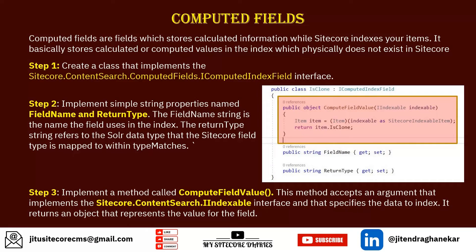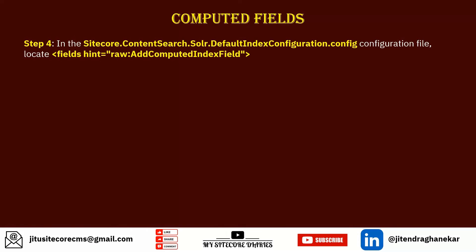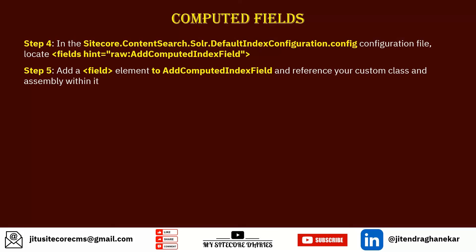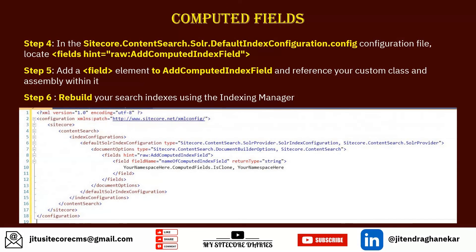Step 4: in the Sitecore ContentSearch Solr default index configuration file, locate the `fieldMap` hint set to `raw` and find the `computedIndexFields` node. Add a field element to `addComputedIndexField`, referencing your custom class and assembly. Then rebuild your search indexes. You write a patch config file where you add the field with its name, data type, and the namespace of the class you created.